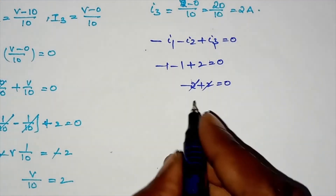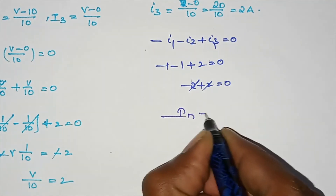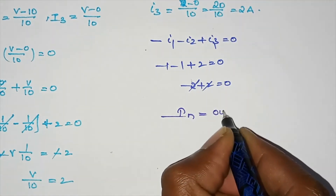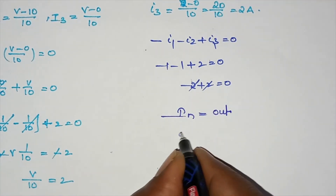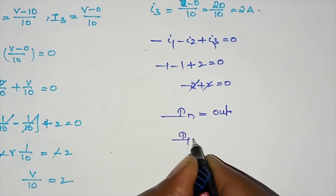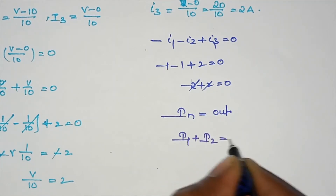Incoming current is equal to outgoing current. Incoming current is I1 plus I2; outgoing current is I3.